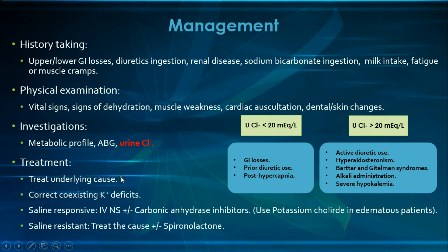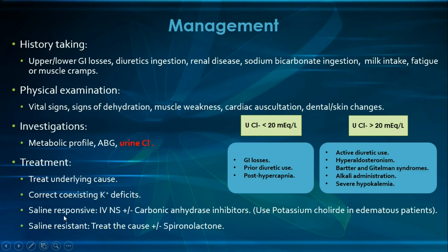Treatment involves addressing the underlying cause, correcting potassium deficits with potassium chloride, and correcting other electrolyte abnormalities; potassium-sparing diuretics may also be given. Metabolic alkalosis is classified as saline-responsive (chloride-responsive) or saline-resistant (chloride-resistant). For saline-responsive cases — most causes except hyperaldosteronism, Bartter/Gitelman syndromes, and Cushing syndrome — give IV normal saline with or without carbonic anhydrase inhibitors; for edematous patients, use potassium chloride instead to avoid volume overload.